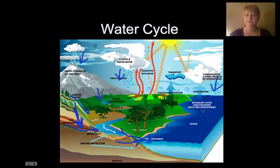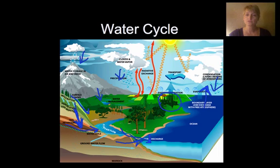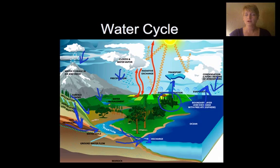Then there's this evaporative process — evaporation puts the water back into the atmosphere. Another way that water gets back into the atmosphere is plants do something called transpiration. As they pull water up through their roots and into their stems and leaves to do photosynthesis, that water actually leaves their leaves — that's called transpiration, and it puts a lot of water back into the atmosphere.